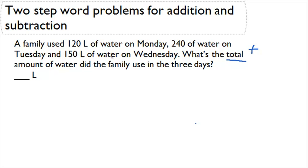Now I'm going to find the important numbers. On Monday, the family used 120 liters of water. On Tuesday, they used 240 liters of water. And on Wednesday, they used 150 liters of water.